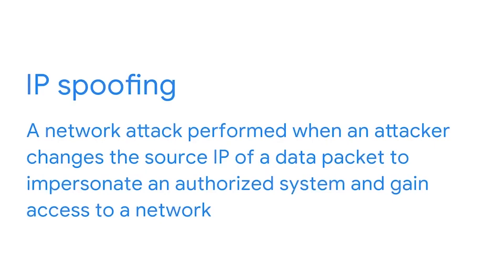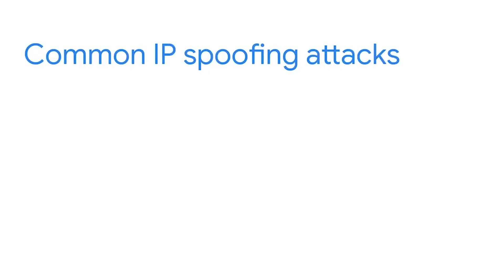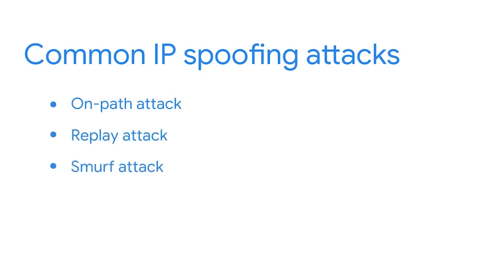Let's learn about another kind of network attack called IP spoofing. IP spoofing is a network attack performed when an attacker changes the source IP of a data packet to impersonate an authorized system and gain access to a network. In this kind of attack, the hacker is pretending to be someone they are not so they can communicate over the network with a target computer and get past firewall rules that may prevent outside traffic. Some common IP spoofing attacks are on-path attacks, replay attacks, and smurf attacks.